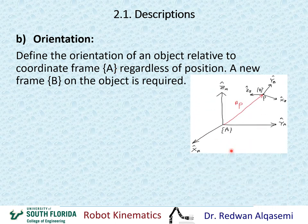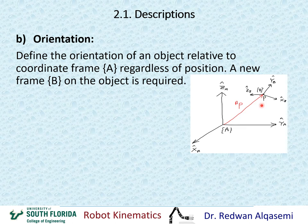Now if we look at this drawing, this is frame A, my original frame. I have XA, YA, and ZA, and then I have a point here on an object. So the first thing I need to do is attach a frame to that point. I'm attaching frame B, which has XB, YB, and ZB, into point P. When we talk about position, this vector represents the position of P relative to frame A.